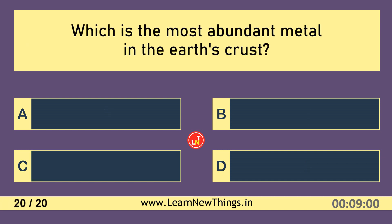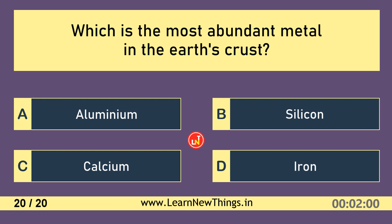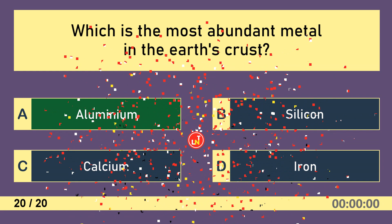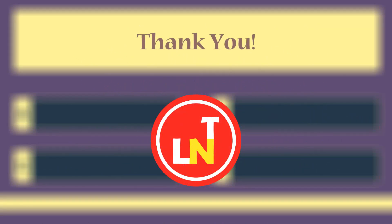Which is the most abundant metal in the earth's crust? Aluminium.